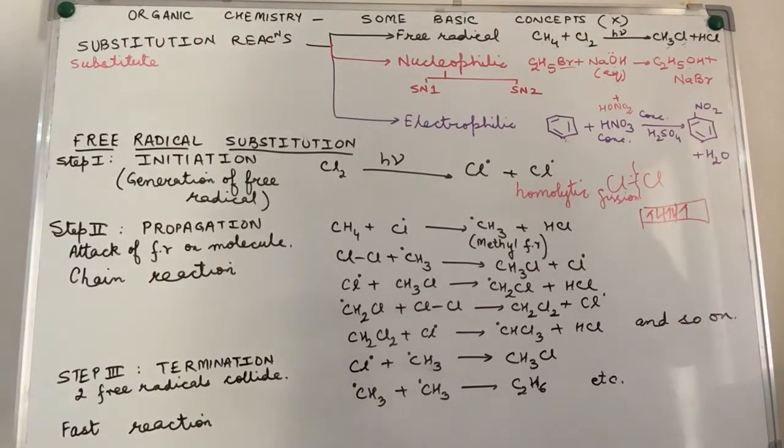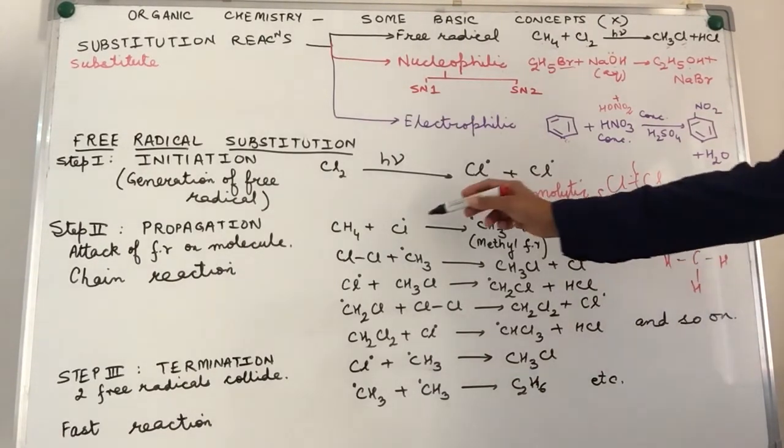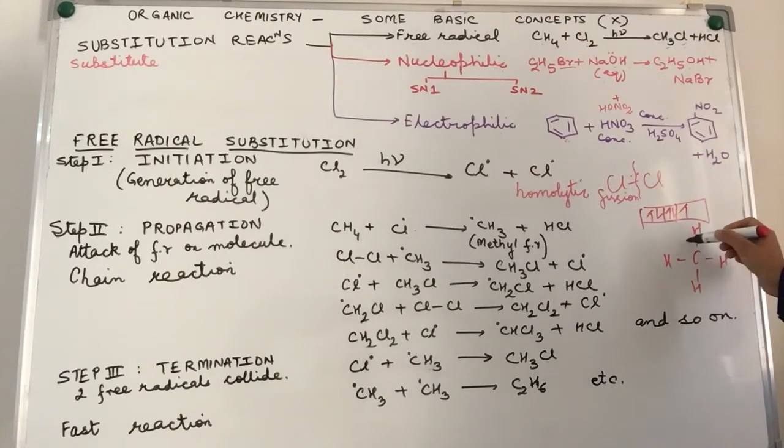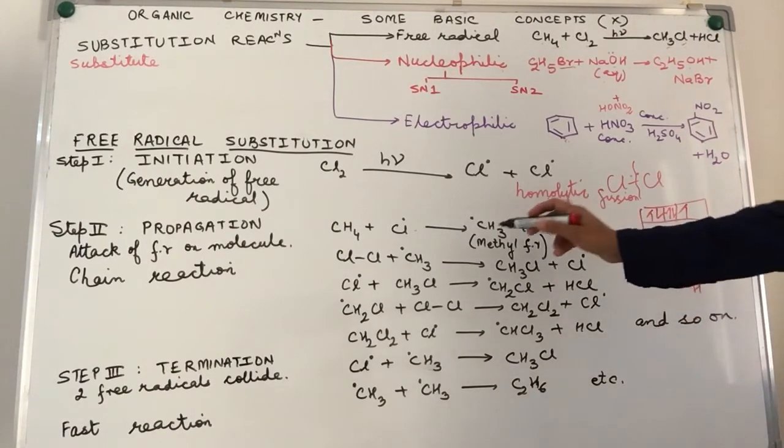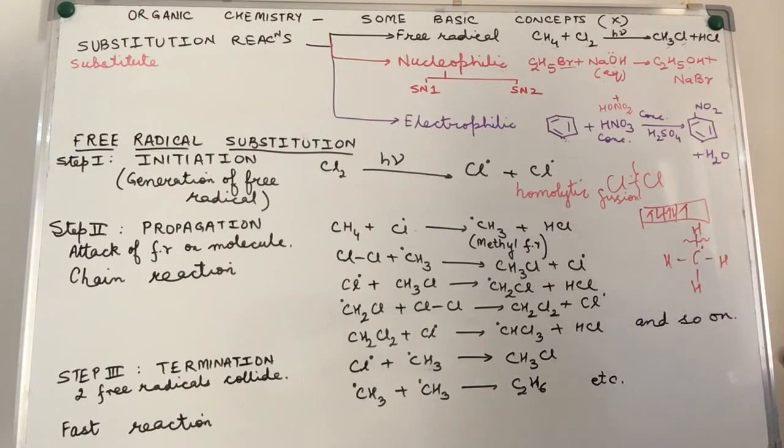Now, methane is actually formed by a single covalent bond between carbon and the four hydrogen atoms. So, because of the highly reactive chloride free radical, one of these bonds breaks again by homolytic fission. So, we are left with carbon having an unpaired electron called as the methyl free radical and HCl is the byproduct.